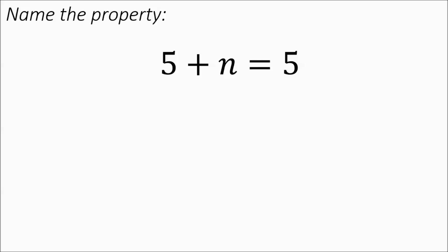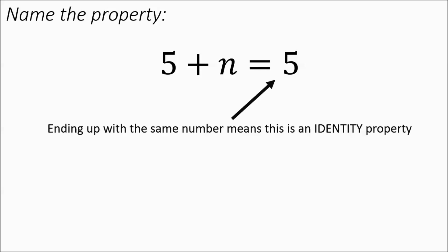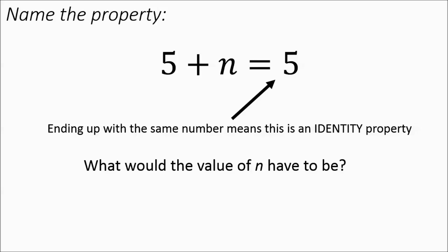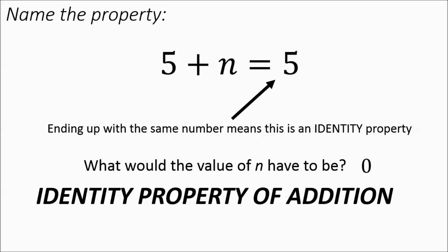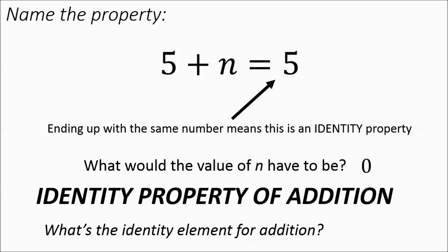5 plus a number equals 5 — we're ending up with the same number, so it's going to be some kind of identity property. What would the value of n have to be? It's going to have to be 0 because 5 plus 0 equals 5. That's the identity property for adding. And the identity element for adding — what did you add to 5? It's a 0.